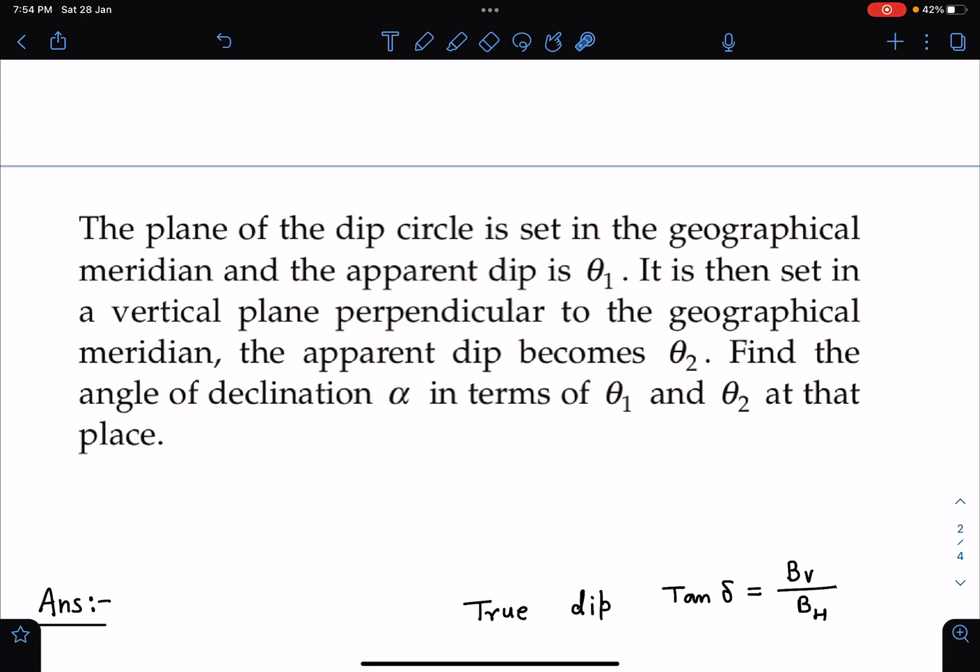So again we are rotating it by 90 degrees and then the apparent dip becomes θ₂. Then they are asking us in the question: find the angle of declination α in terms of θ₁ and θ₂ at that particular place.